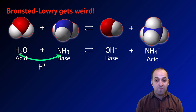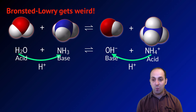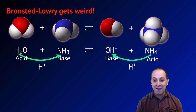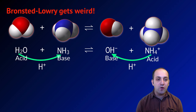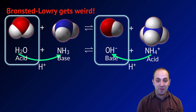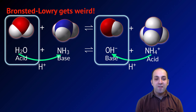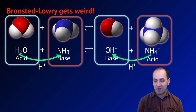If we were to look at the reverse reaction, we'd see that ammonium would have to donate its proton back to hydroxide to turn it back into water. In that case, ammonium is acting as the acid, and the hydroxide ion is acting as the base. Because of this, you might notice that water starts as an acid, but it becomes a hydroxide ion that acts as a base in the reverse reaction. Similarly, ammonia starts as a base, but it becomes an ammonium ion, which would act as an acid in the reverse reaction.